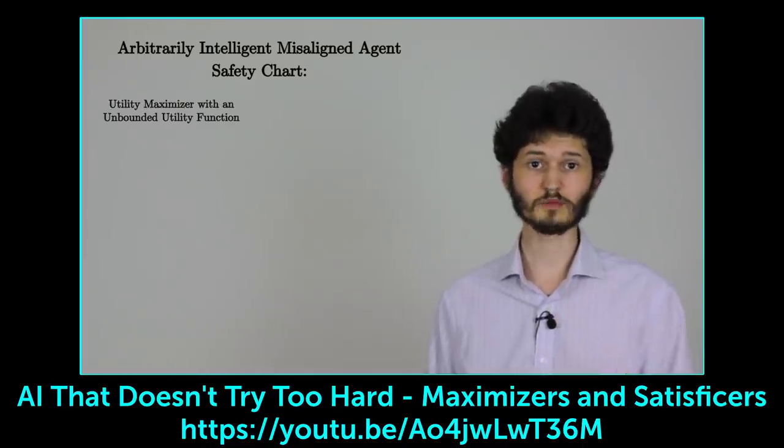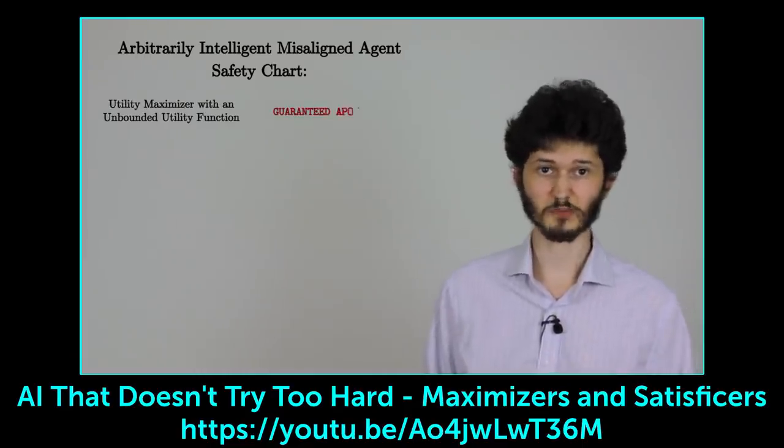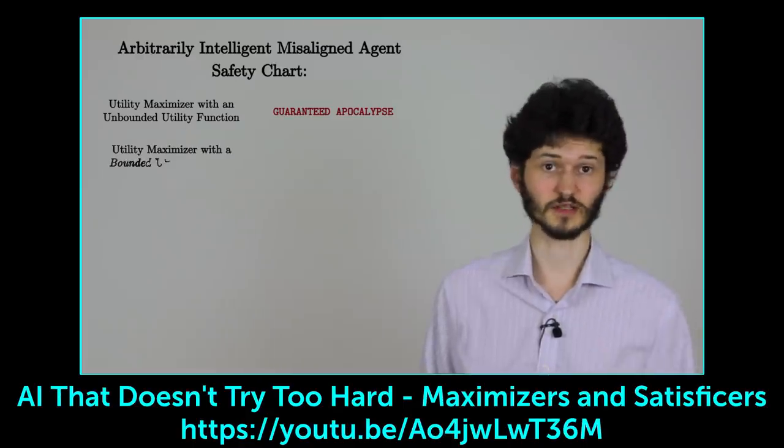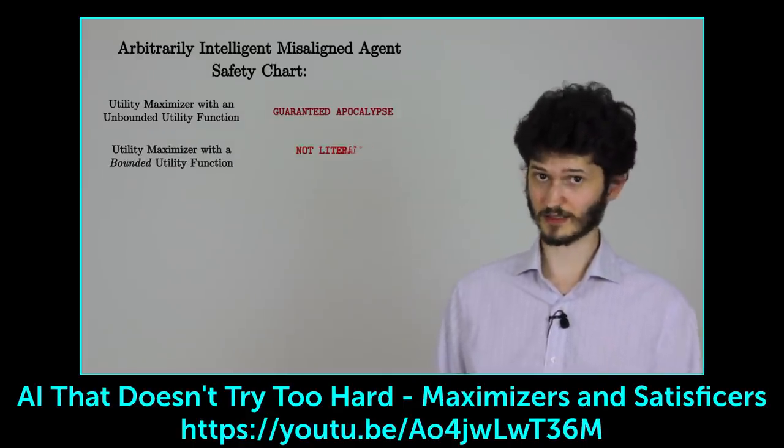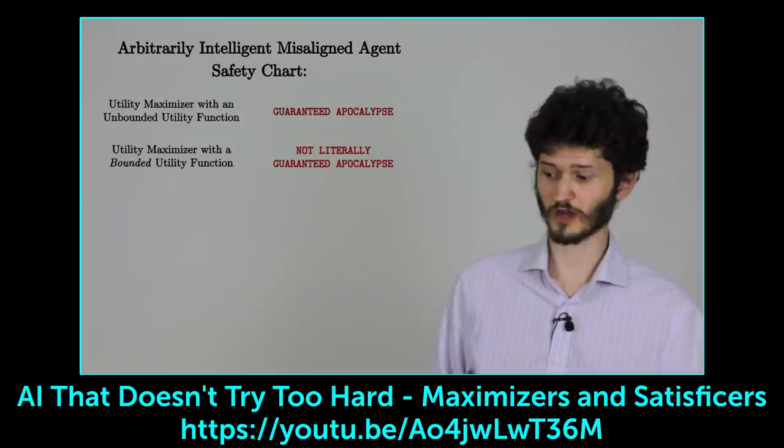In the previous video, we looked at utility maximizers, expected utility maximizers, and satisficers using unbounded and bounded utility functions. A powerful utility maximizer with an unbounded utility function is a guaranteed apocalypse. With a bounded utility function, it's better in that it's completely indifferent between doing what we want and disaster.